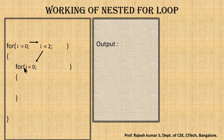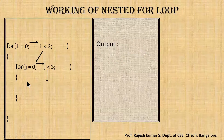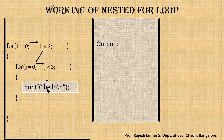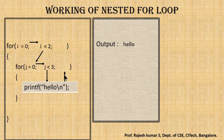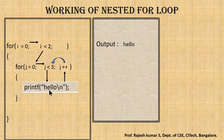Now j is initialized with the value zero. We check the condition: j less than three — is zero less than three? Yes. The condition is true, so the statement belonging to the inner for loop will be executed. We print 'hello' on the monitor screen. Once hello is printed, I increment the inner for loop — j becomes one. I check the condition again: one is less than three — true. So we execute the inner for loop statement again.